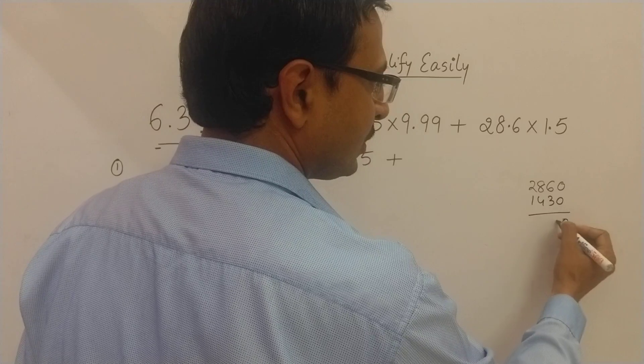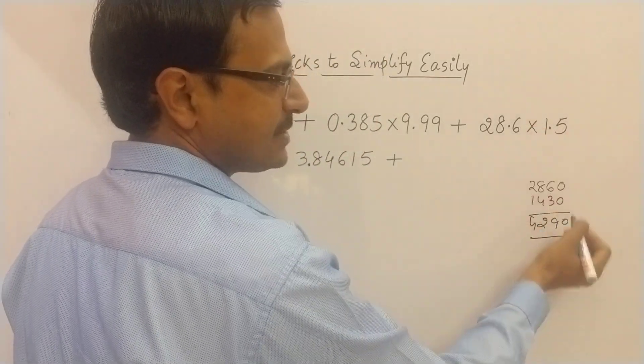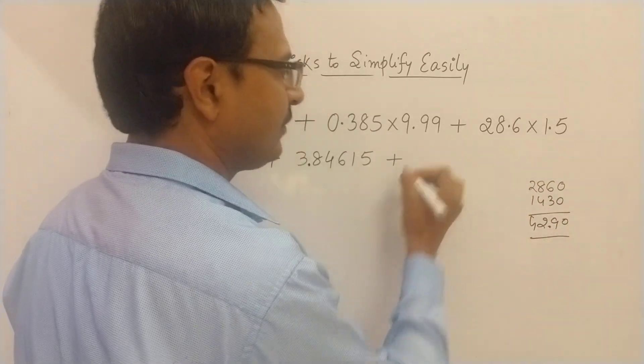So add these. You get 4,290. Now you put the decimal 1, 2, 2 places. So this is 42.90.